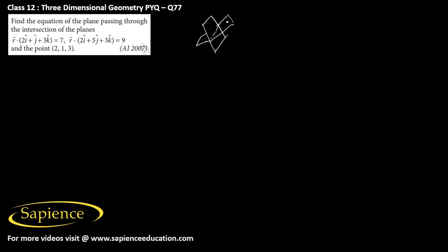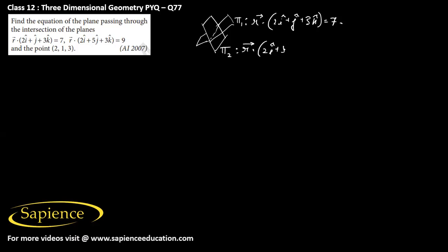We are asked to find the equation of the plane passing through the intersection of two given planes, and it should pass through the point (2, 1, 3). The equation of plane π1 is given as r⃗ · (2î + ĵ + 3k̂) = 7, and the equation of plane π2 is given as r⃗ · (2î + 5ĵ + 3k̂) = 9.